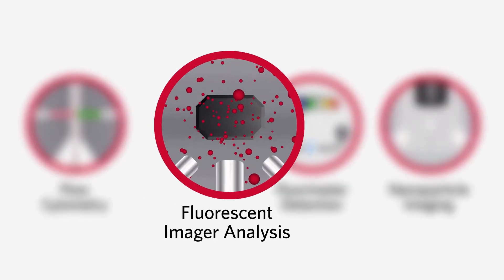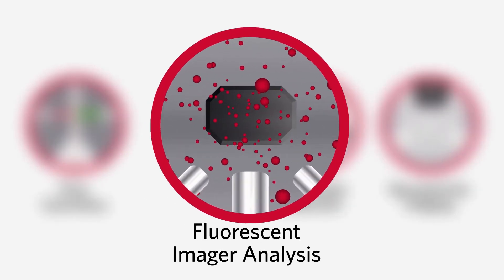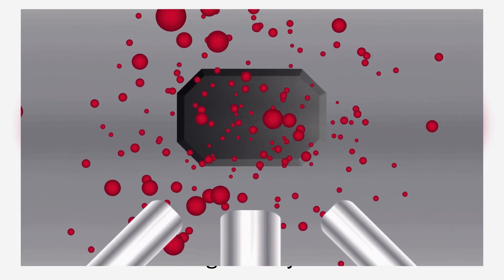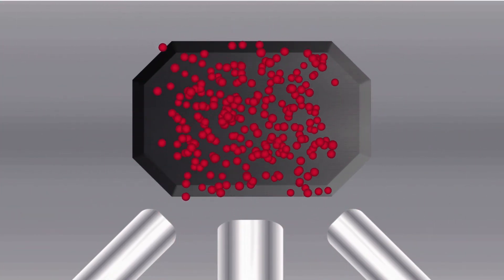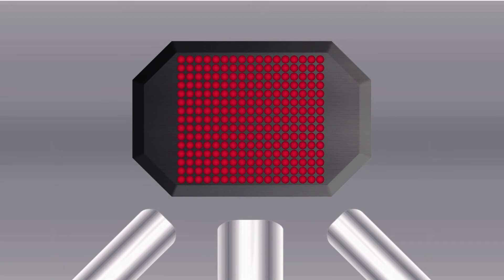Another detection method is fluorescent imager analysis. This method reads all the beads at once. The beads are fed into a chamber where they are captured by a magnetized wall. The magnetic magplex beads are required for this method.